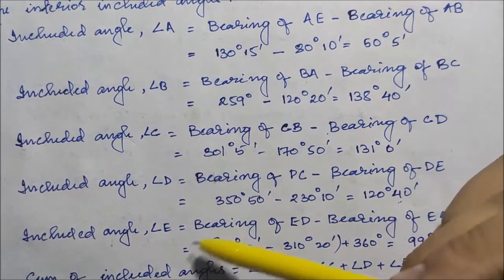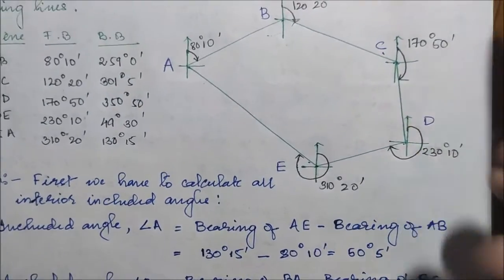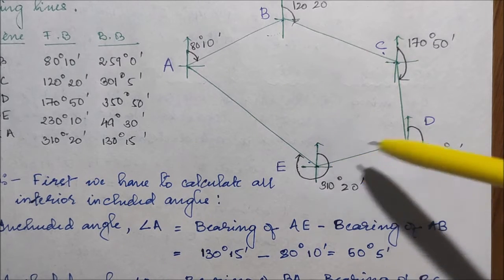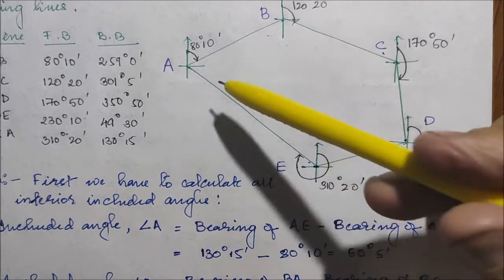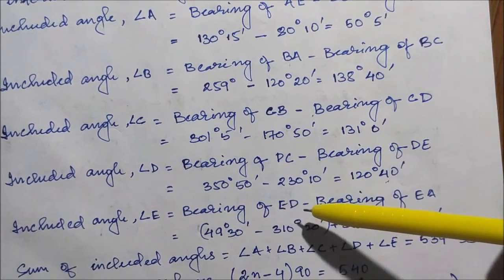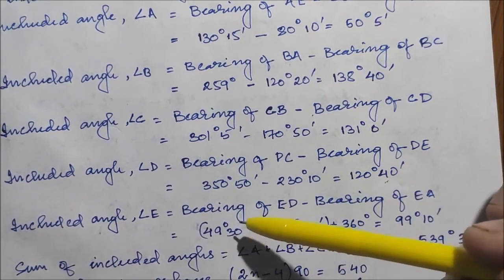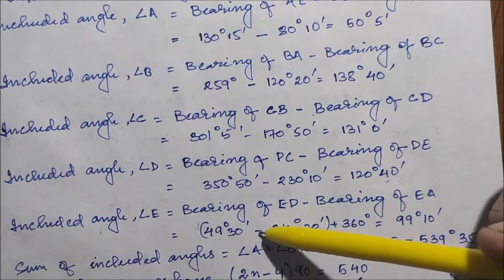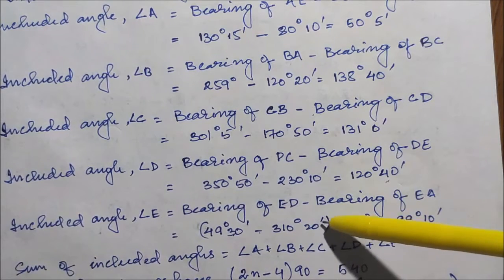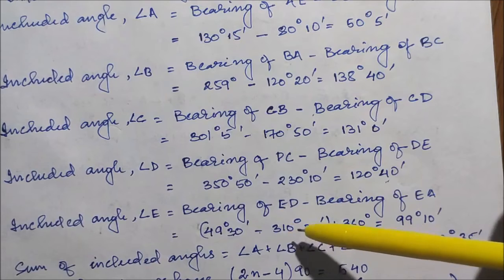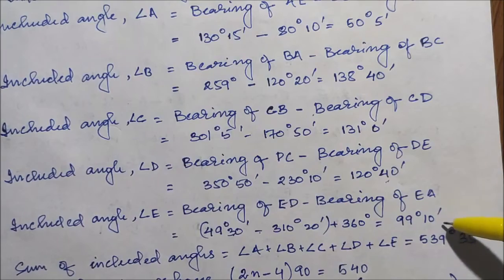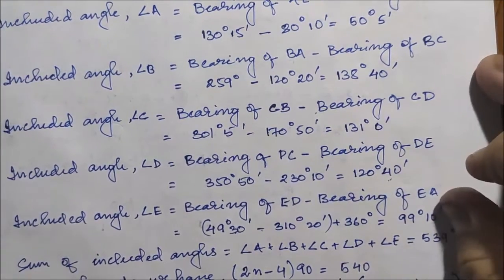The last angle, angle E, is given by the bearing of ED minus the bearing of EA. Bearing of ED is 49°30′ minus the bearing of EA. This gives a negative value, so we add 360° to find the included angle E.